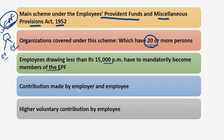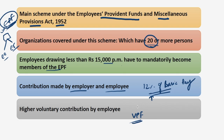The contribution paid by the employer is 12% of basic pay plus dearness allowance plus retaining allowance. This is the minimum contribution towards EPF, but the employee can voluntarily pay a higher contribution above the statutory rate of 12% of basic pay, and this is called contribution towards the Voluntary Provident Fund.